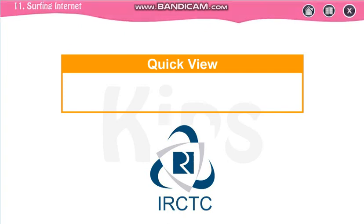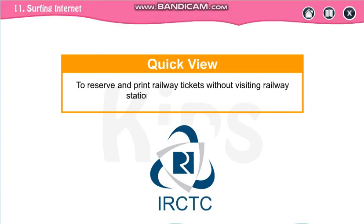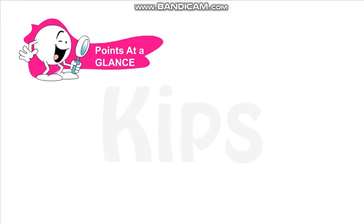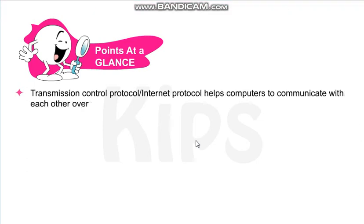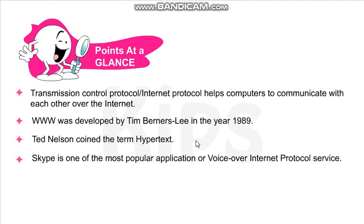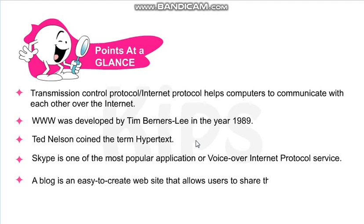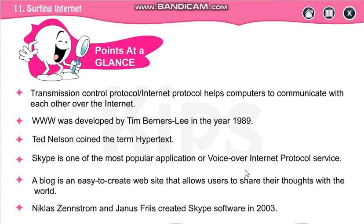There is also a site for IRCTC for railways. IRCTC is a site where you can book and reserve your tickets: www.irctc.co.in. Now, points at a glance — what we have learned in this lesson: TCP and IP help computers communicate with each other over the internet. WWW was developed by Tim Berners-Lee in 1989. Ted Nelson coined the term 'hypertext'. A blog is an easy-to-create website that allows users to share their thoughts. Nicholas Janus Tom and Janus Fries created Skype software in 2003.